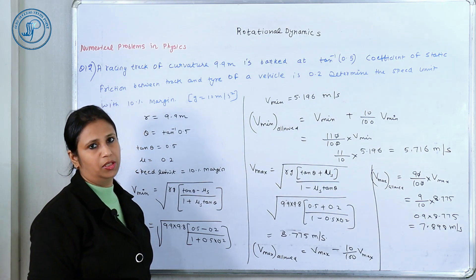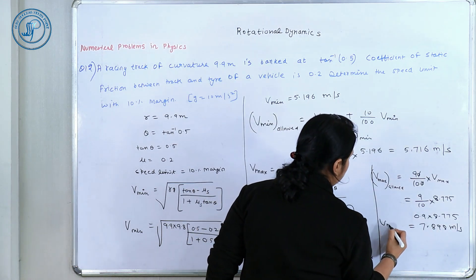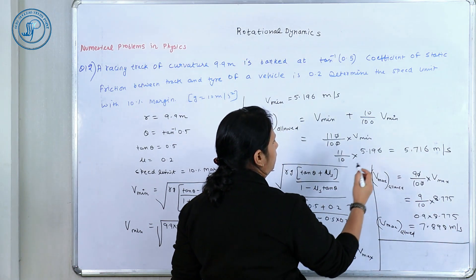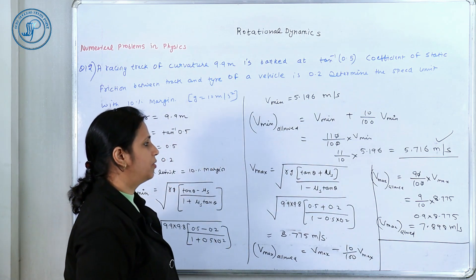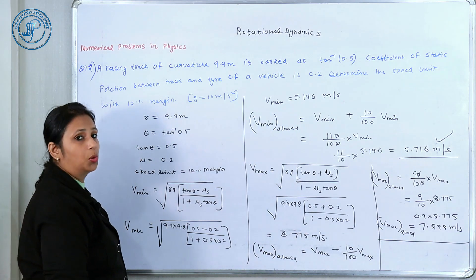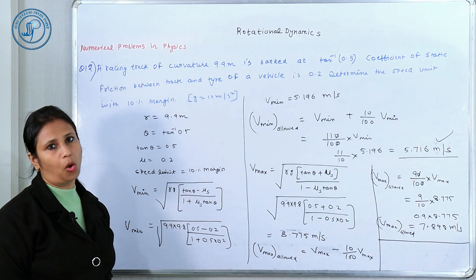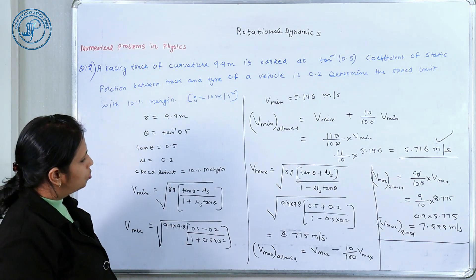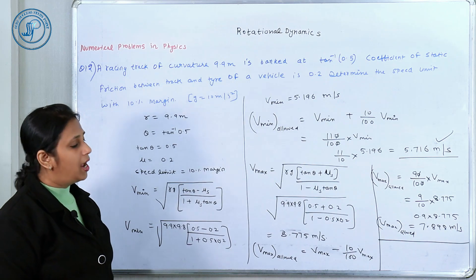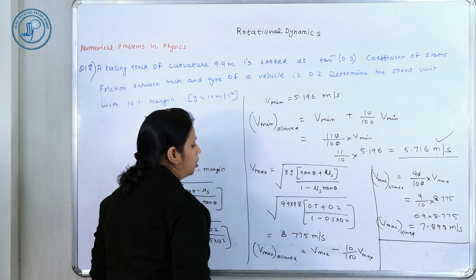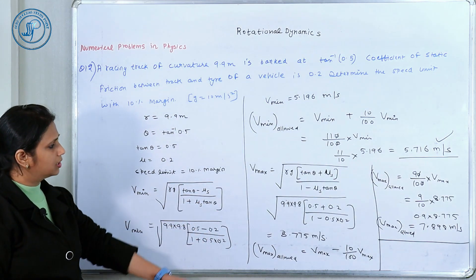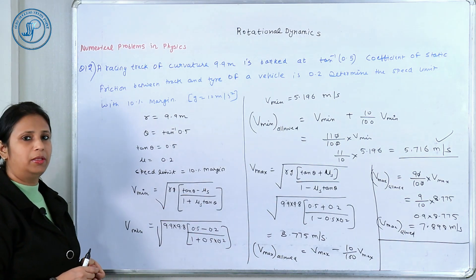So the maximum allowed speed is 7.898 m/s and the minimum allowed speed is 5.716 m/s. The calculation part is a bit tough — if you know how to use logarithm tables, this becomes very easy. Do simple parts manually, then use the log table for the rest. This is the final answer: maximum and minimum allowed speeds.